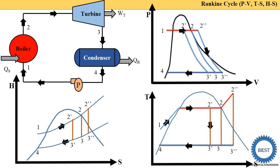After the condenser, the fluid is supplied to the pump, which closes the circuit. In the pump, pressure is increased. On the PV diagram, we draw a vertical line because the volume of water does not change in the pump — the projection of points one and four on the x-axis gives one point: V1 = V4. Pressure increases from P4 to P1. On the TS diagram, temperature slightly increases due to friction in the pump.